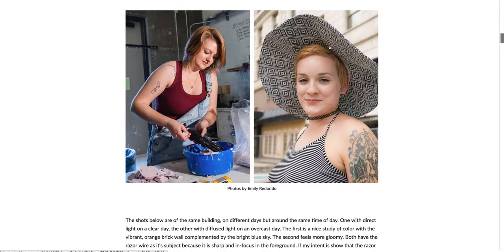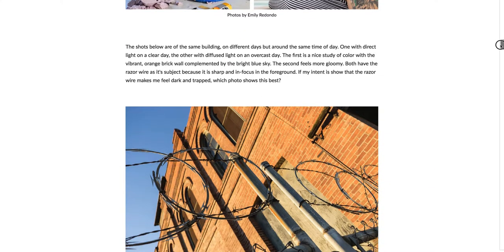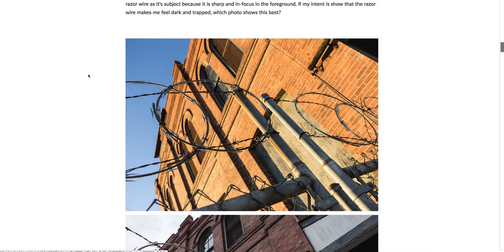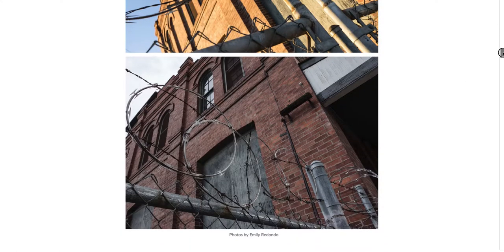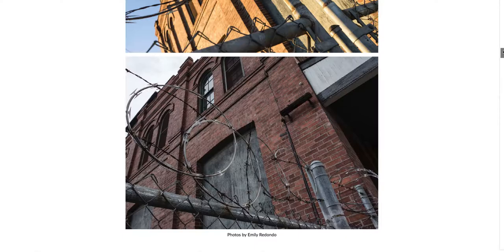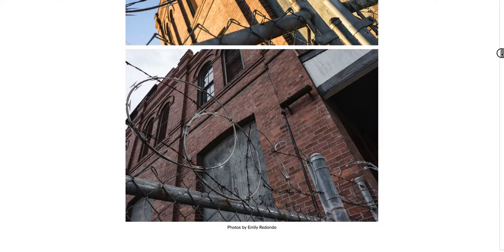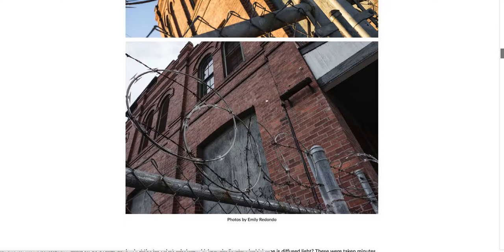Oftentimes for portraiture, people will choose a softer, diffused light. Here are photos of the exact same building around the same time of day but in two different weather conditions. The first is a bright sunny day with the sun shining straight onto the building — you can see the shadow is delineated very well. The same building on an overcast day shows clouds filtering and scattering the sunlight. We still see shadow, but it's not nearly as delineated. The light is bouncing around the atmosphere, but with a much different effect.